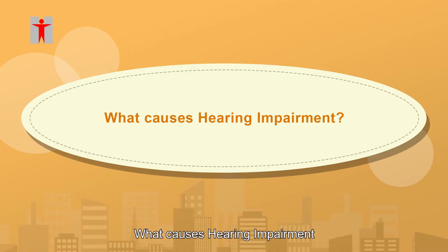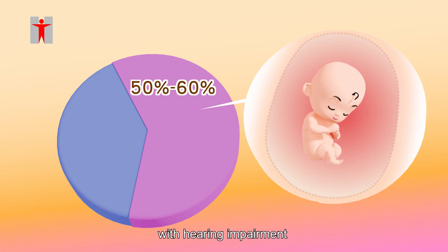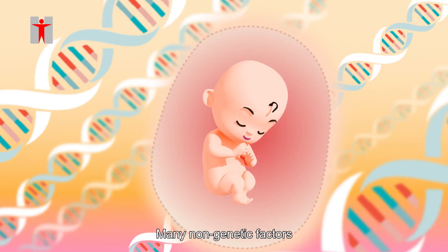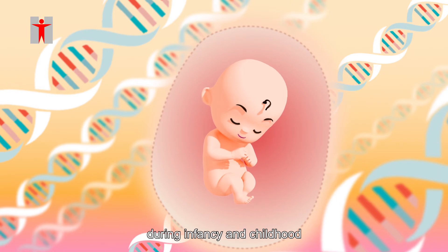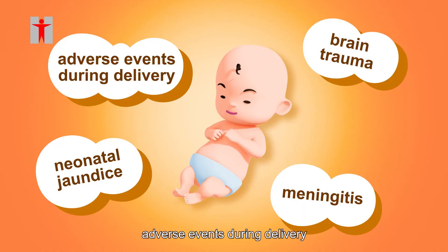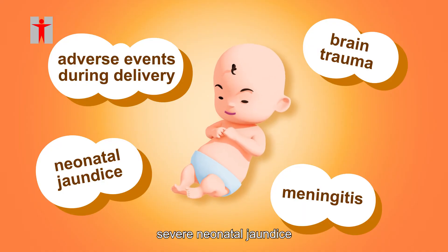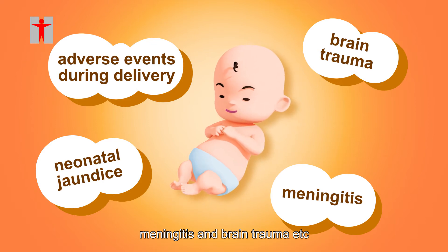What causes hearing impairment? Genetic causes account for roughly 50 to 60 percent of children with hearing impairment. Many non-genetic factors can also lead to hearing impairment during infancy and childhood, such as fetal infection during pregnancy, adverse events during delivery, severe neonatal jaundice, meningitis, and brain trauma.